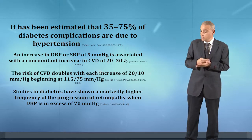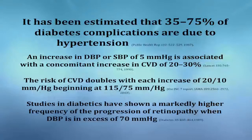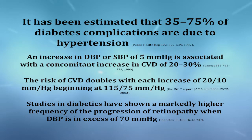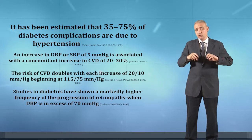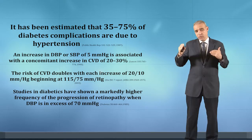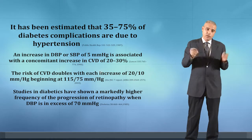The risk of cardiovascular disease doubles with each increase of 20/10 mmHg starting from 115 systolic and 75 diastolic. So many of our diabetic patients with apparently normal blood pressure already carry 3 to 4 times the cardiovascular risk, since the risk starts to increase once blood pressure exceeds 115/75. Studies on microvascular injury also show markedly higher frequency of retinopathy progression if blood pressure increases beyond 70 mmHg diastolic.